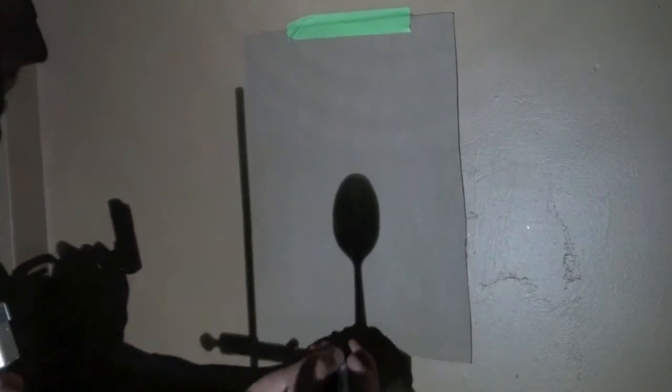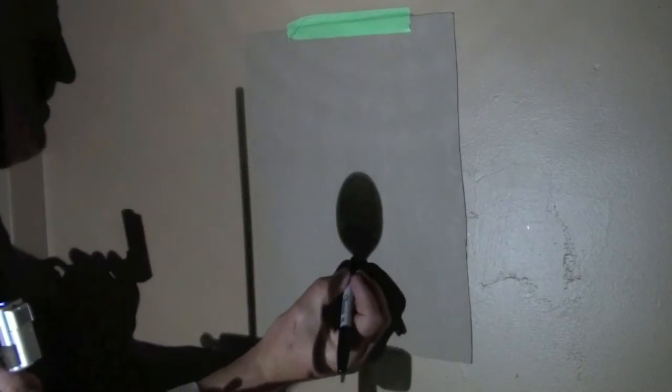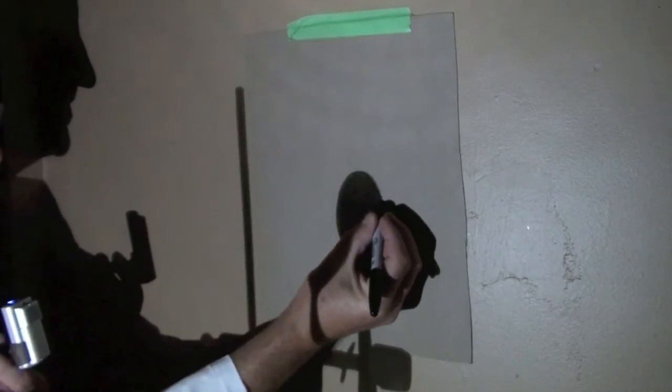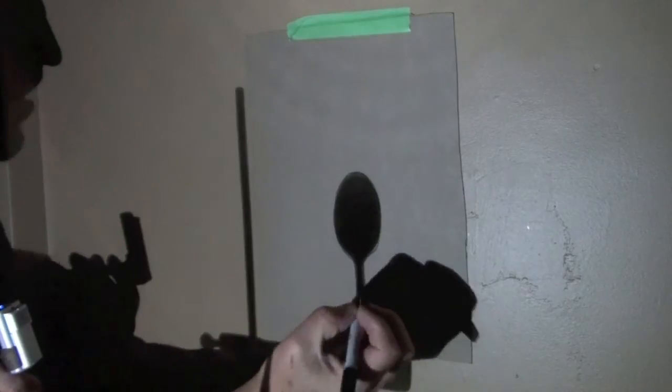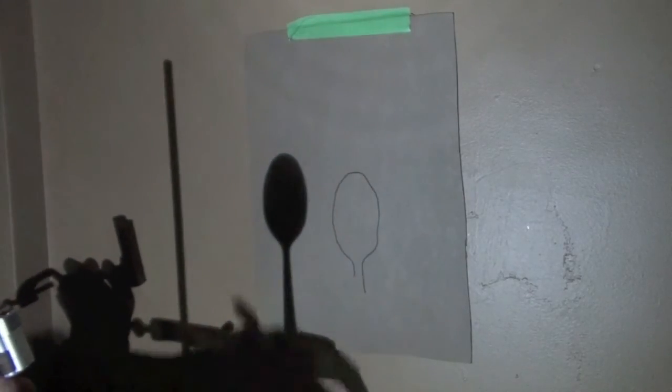And then we'll make a tracing, a quick tracing, just like that, and we'll label that one A.